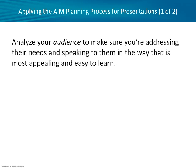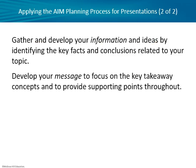Now we want to get into the AIM process — audience, information, and message. First up: analyzing the audience to make sure you're addressing their needs and speaking to them in a way that is most appealing and easy to learn. Then we have the information part of AIM — developing information and ideas by identifying the key facts and conclusions related to the topic. Instead of trying to talk about every possible aspect of a topic and talk people to death, you want to leave some stuff out. You don't want to be necessarily comprehensive; instead, think about some key points you can get across, some takeaways.